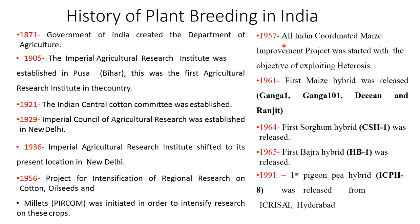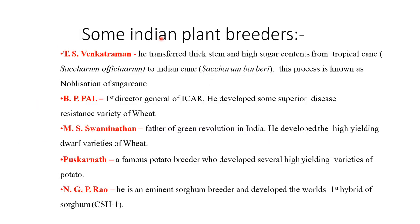In 1957, the All India Coordinated Maize Improvement Project was started with the objective to exploit heterosis. In 1964, the first sorghum hybrid, CSH-1, was released. In 1965, the first bajra hybrid was released. In 1991, the first pigeon pea hybrid was released from ICRISAT, Hyderabad.